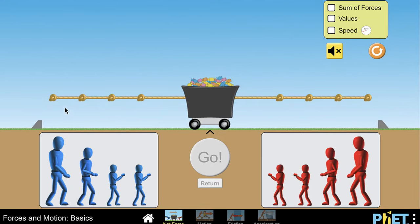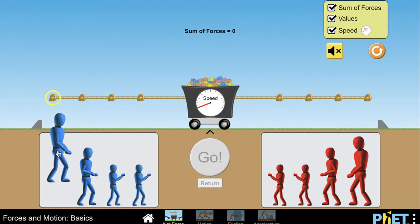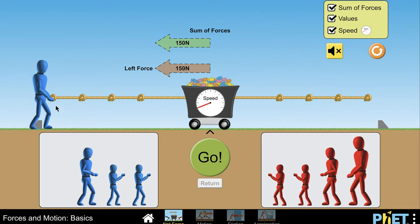In the net force section, we have a big cart in the middle that's loaded down and you have a number of different figures—blue figures on the left side, red figures on the right. There are also several checkboxes here that you can use to see the sum of the forces, values, and speed. Now you can put one figure on one side, for example, and it will now show the force. This figure is 150 Newtons to the left.